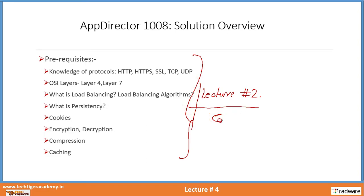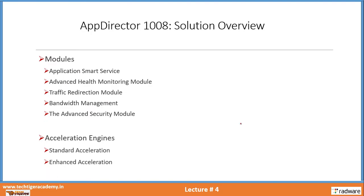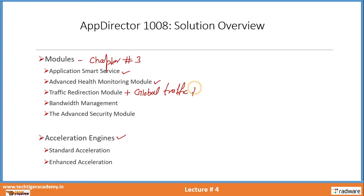Lecture number 2 is all about components understanding. Now, this slide talks about two things: modules and acceleration engines. We have already covered modules in lecture number 3 — we discussed the application smart service module, the advanced health monitoring module, the traffic redirection module, plus global traffic redirection, as well as bandwidth management and the advanced security module.